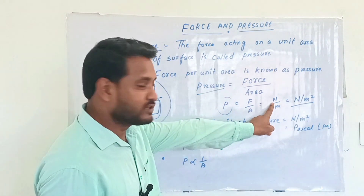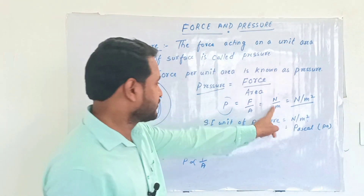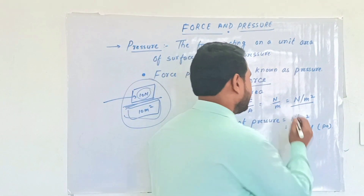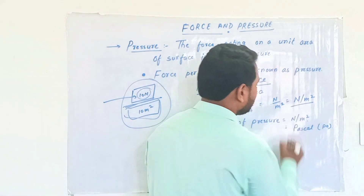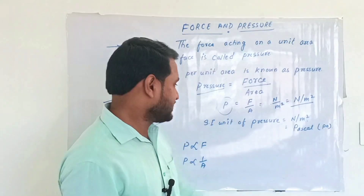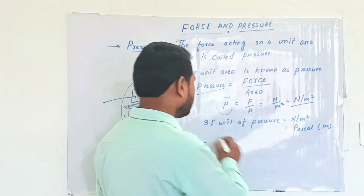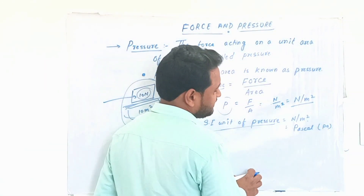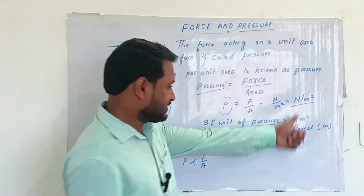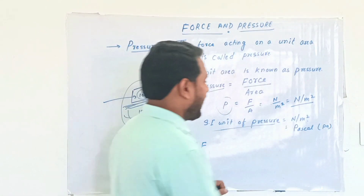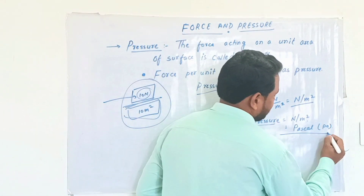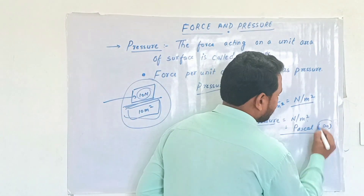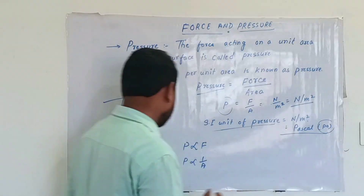The unit of force is Newton. The unit of area is meter squared. So the unit of pressure is Newton per meter squared. The unit of pressure is Newton per meter squared, and another unit is Pascal, denoted by capital P.